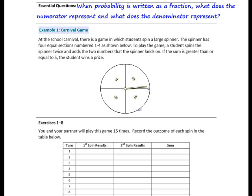I'll demonstrate a few spins. For our first spin, the number lands on 2. For the second spin, the number lands on 4. So you would write in the first turn a 2 and a 4, and the sum is 6. You and your partner will take turns spinning the spinner, recording the results, and adding the sum. Pause the video and complete the activity, then turn the page.